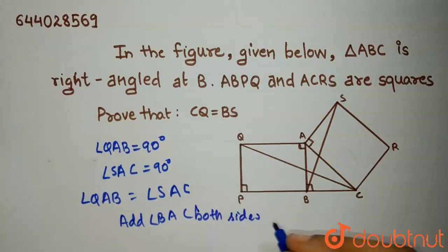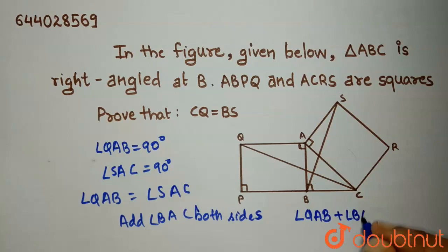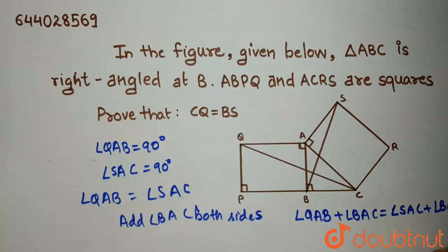So what will happen if you add angle BAC to both sides? This will become angle QAB plus angle BAC equals angle SAC plus angle BAC.